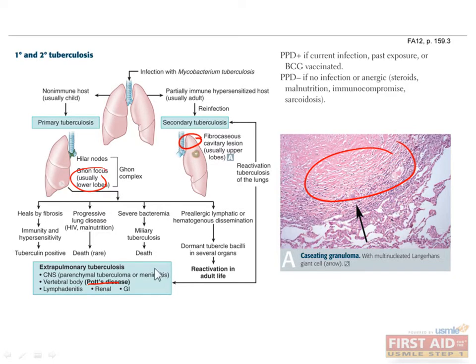Rare complications of primary TB can include miliary tuberculosis and death. Miliary tuberculosis occurs when TB bacteria gain entry to the blood, spread throughout the body, and seed various organ systems. Fatality in disseminated TB is nearly 100% if untreated. Death occurs in hosts who are severely immunocompromised at the time of primary infection, such as malnourished or HIV-positive hosts.